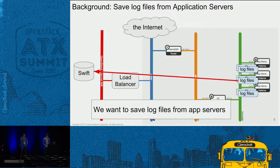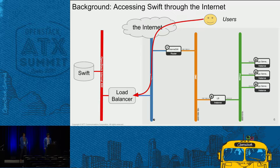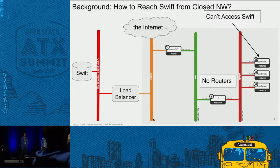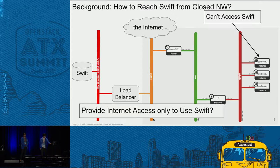Then, let's think about saving some log files to Swift from these servers. In this environment, users can access Swift through the internet. However, application servers have no connectivity to Swift in this case, because there is no connectivity to the external network. And we don't want to provide internet access to the servers only to use Swift.